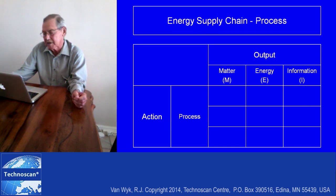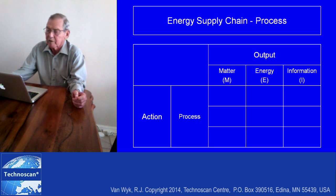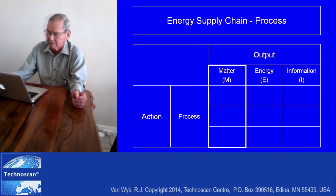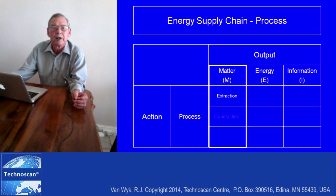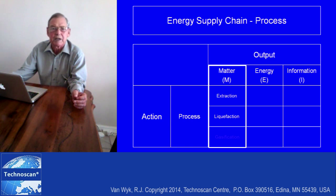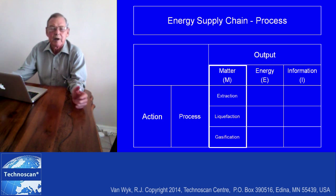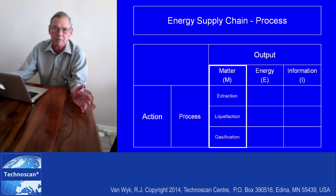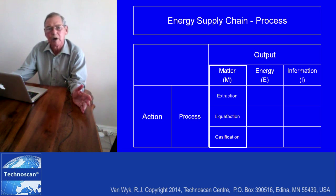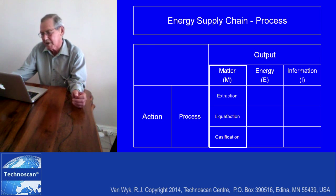At the processing stage, there are a number of outputs that can be generated at the matter level. Examples include extraction, liquefaction, and gasification. Each of these can be analyzed in more detail, and these are only three of about 20 possibilities, but we know how they fit into the overall scheme.